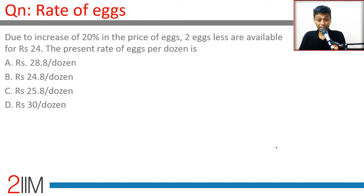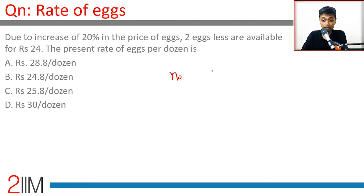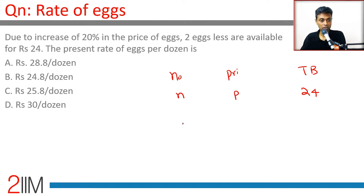Due to an increase of 20% in the price of eggs, 2 eggs less are available for Rs.24. We need to find the number of eggs and the price. The total budget is Rs.24 — you could buy n eggs at a price of P. After the price goes to 1.2P, you can buy only n minus 2 eggs.